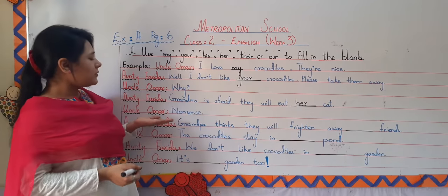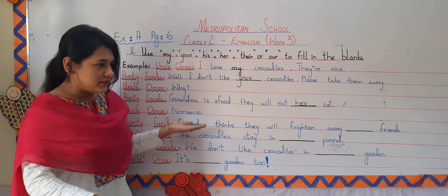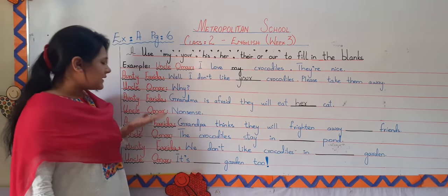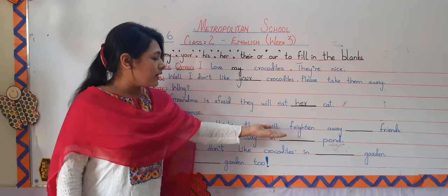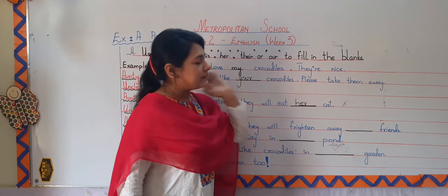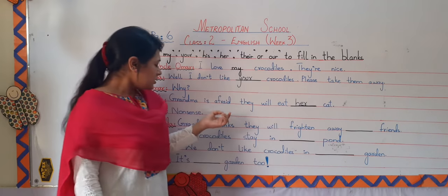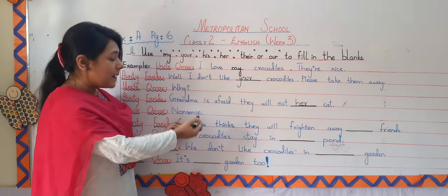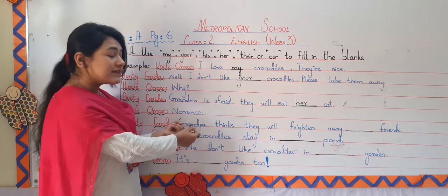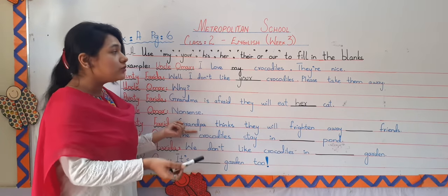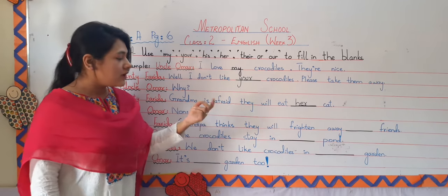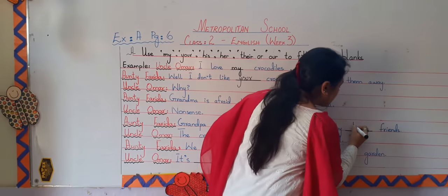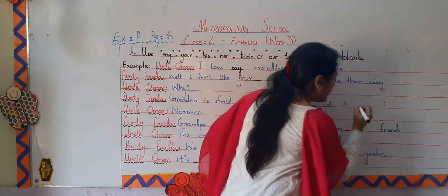After that, Uncle Umar replied, 'Nonsense.' Aunty Farida said, 'Grandpa thinks they will frighten away dash friends.' Just like Grandma, here Grandpa is the third person. But here he is male, and for male we use 'he' or 'his.' So we are going to use 'his friends.'